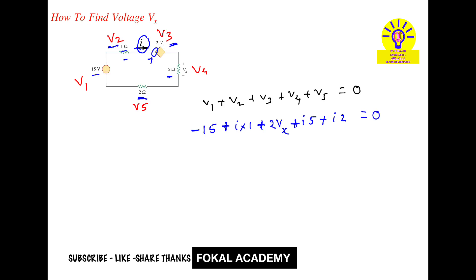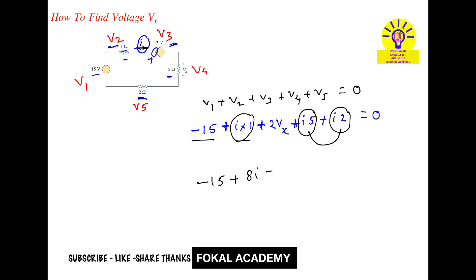Combining terms: minus 15 plus 1I plus 5I plus 2I. That is 1I plus 5I plus 2I, which is 8I total for the resistors, plus 2 times Vx, all equal to zero.